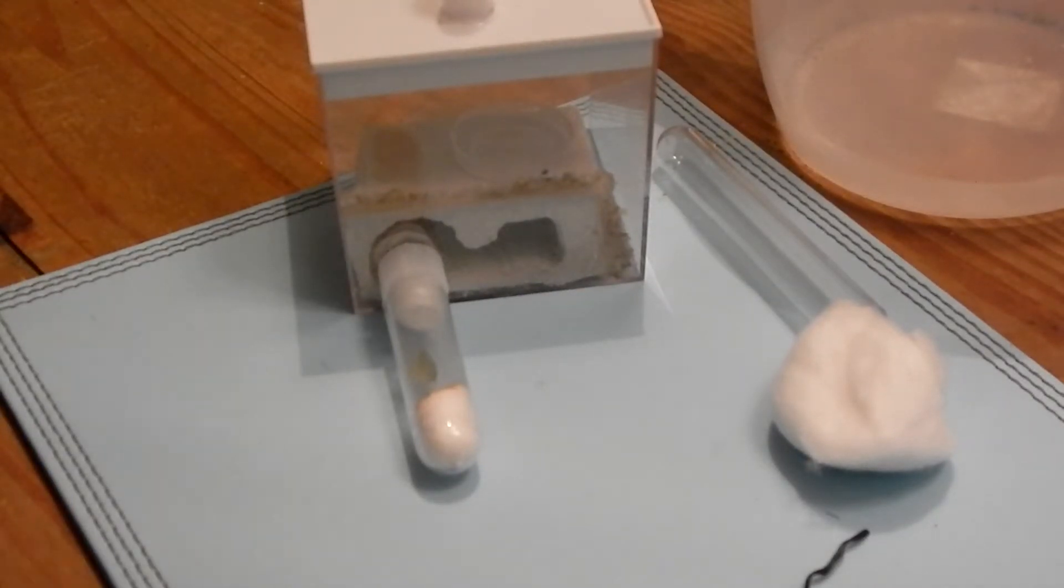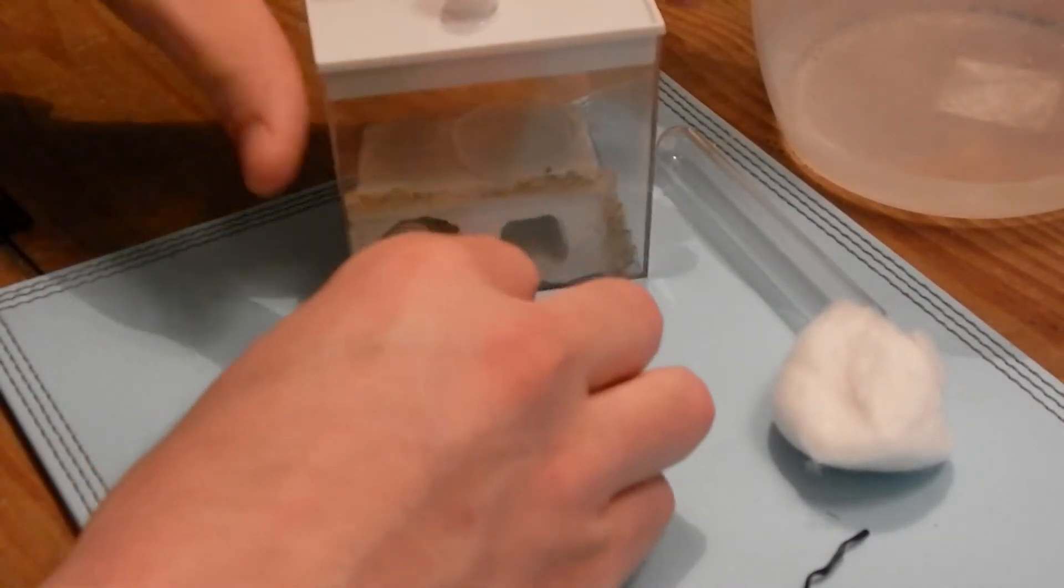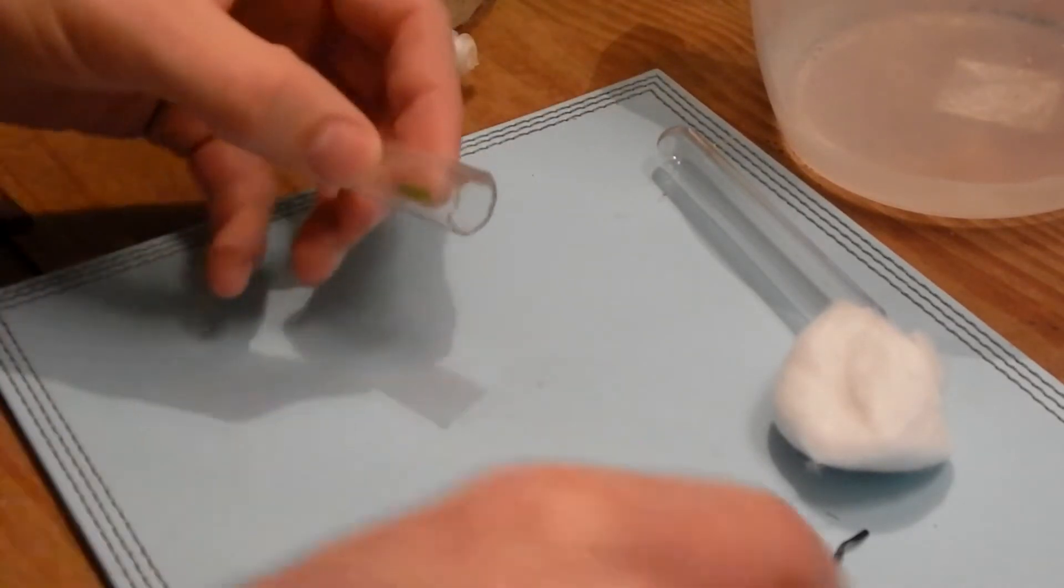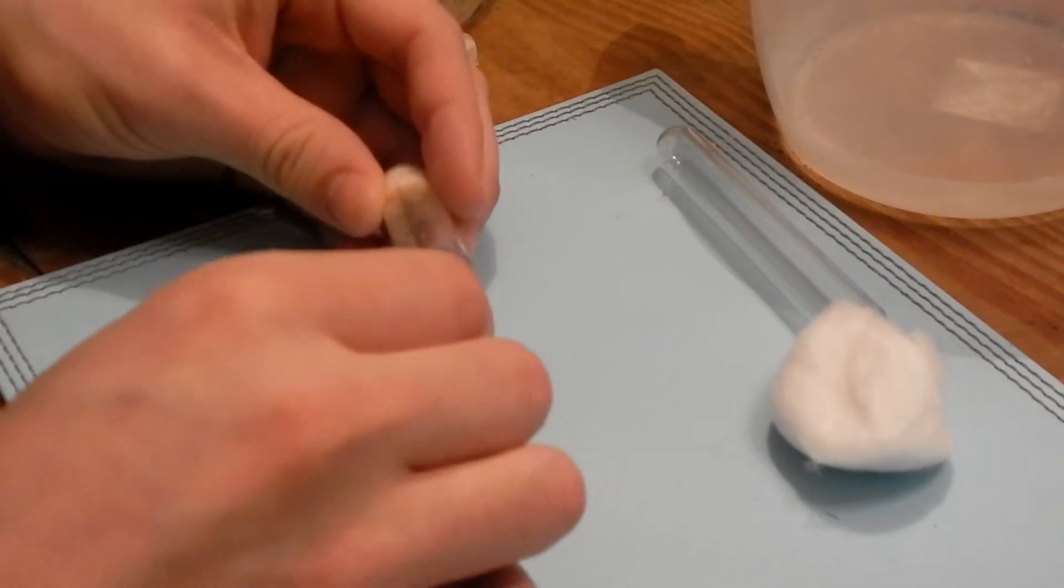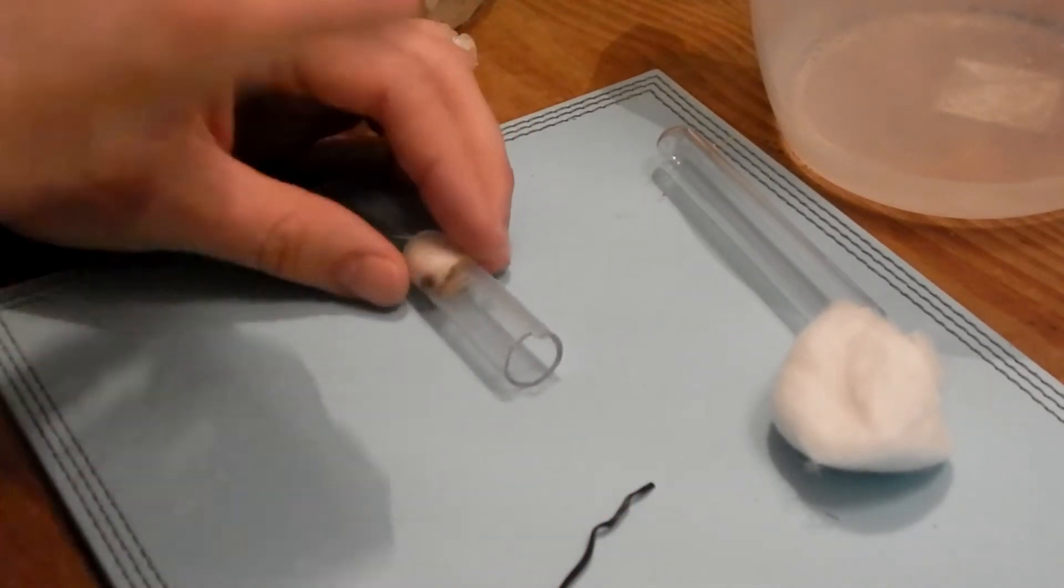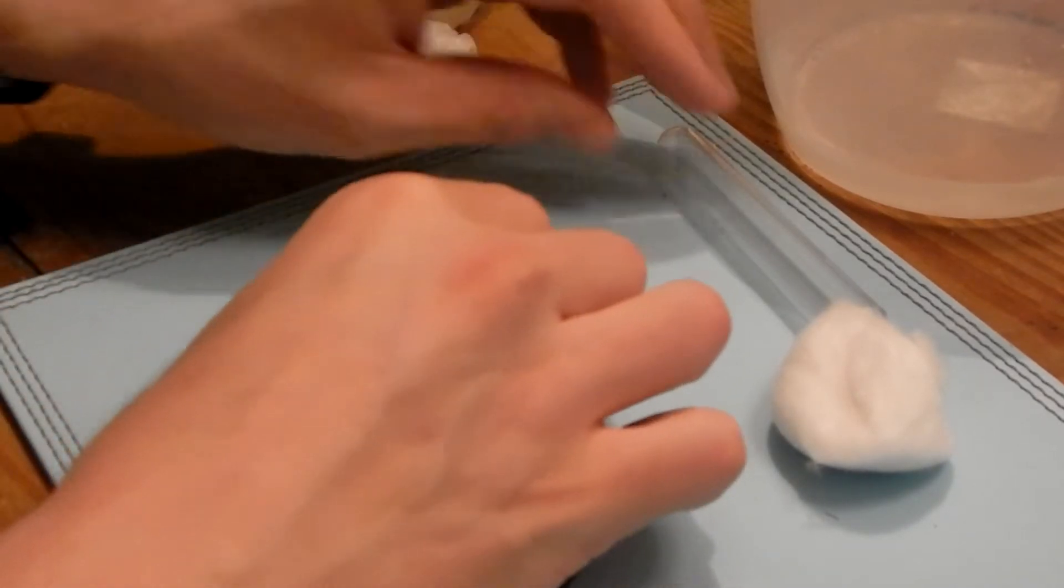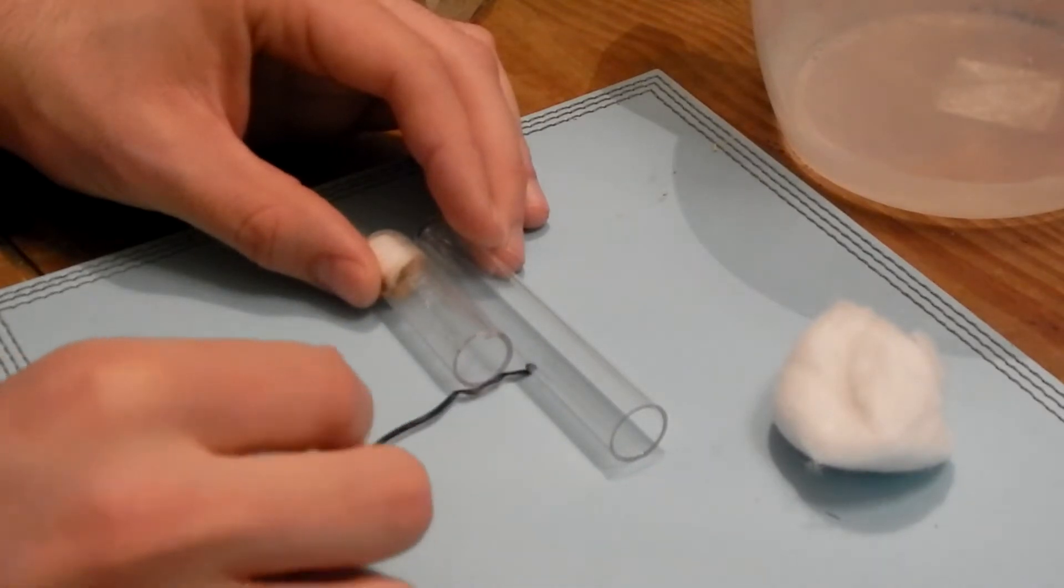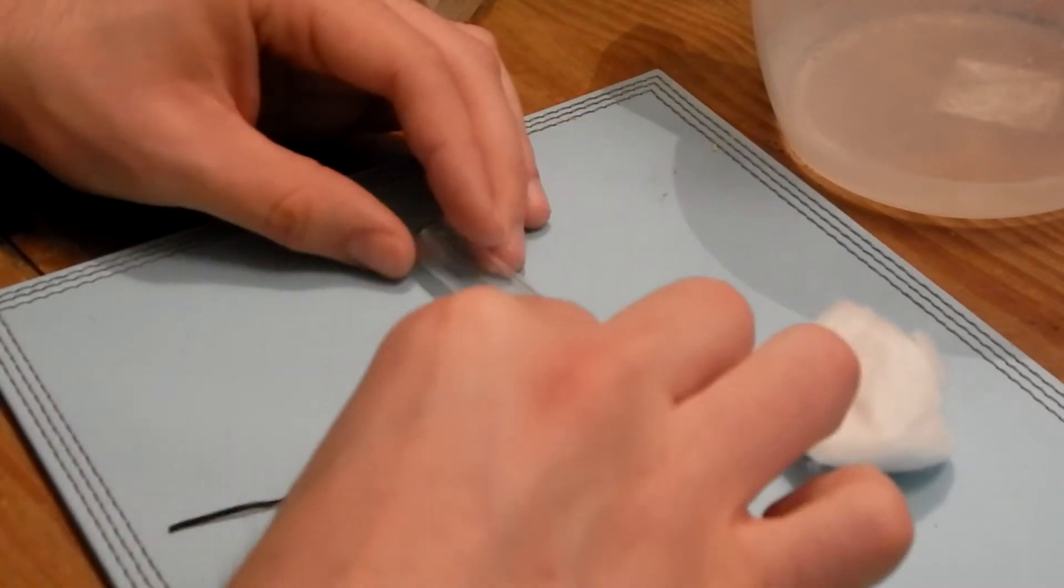So guys, today is the day that I'm going to move the Lasius Flavus queen. I started off by detaching the test tube from the formicarium, and then I used a little tool, just a piece of wire, to remove the cucumber that I left over from last time when I fed her. Then I was measuring up the test tube against the current test tube.